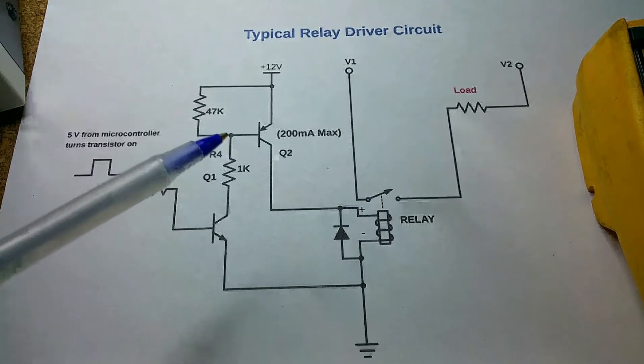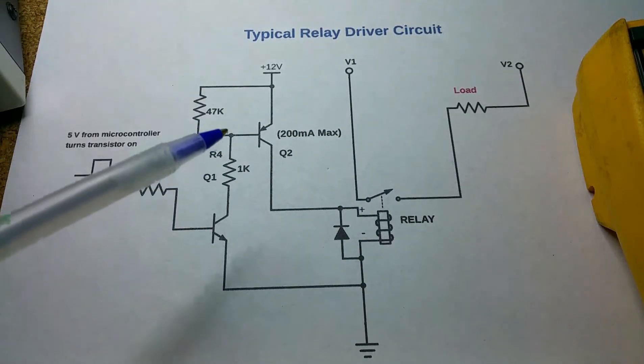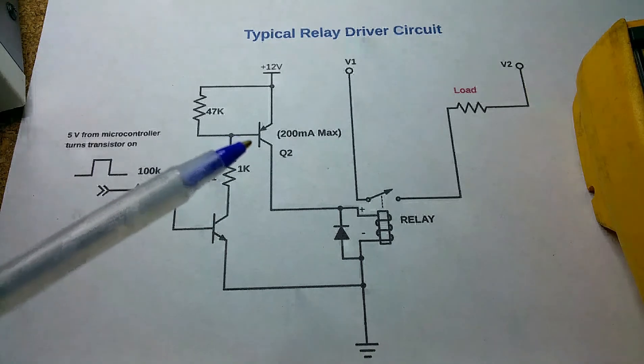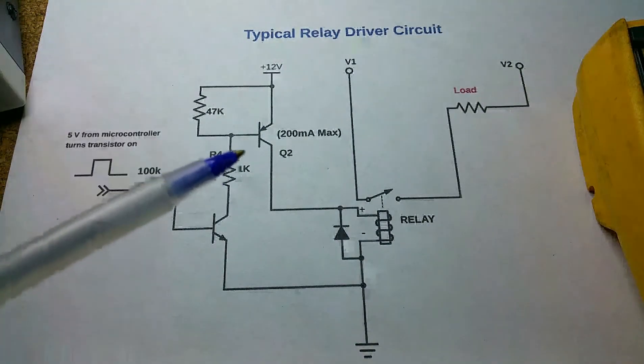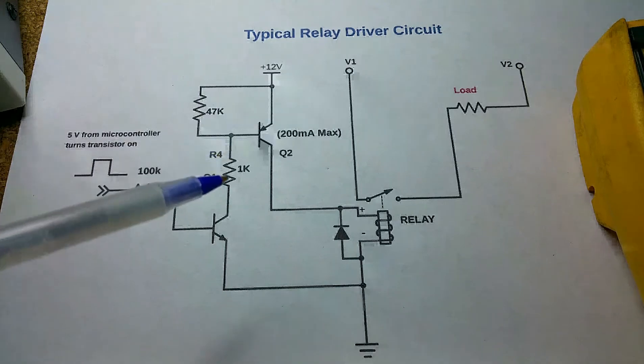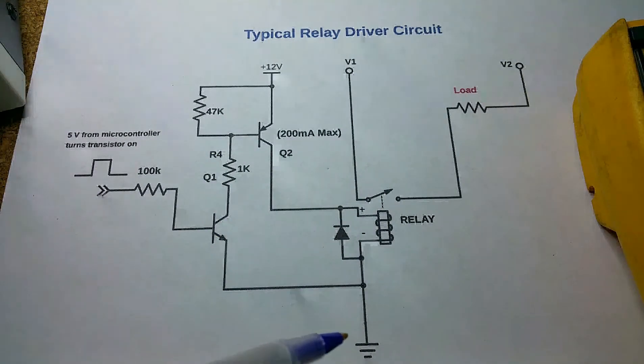So how do we turn this transistor on? Well, to turn this transistor on you need to provide enough current here to put it into what's known as saturation. Basically in English that means turning it on as a switch. In order to do that, enough current has to flow through here down through this resistor down to ground.